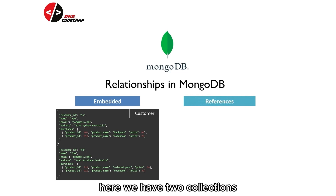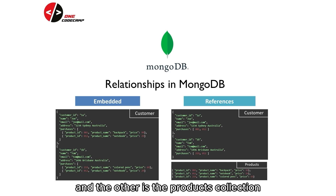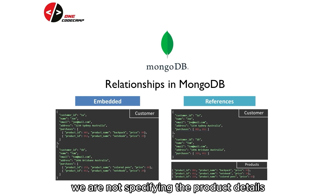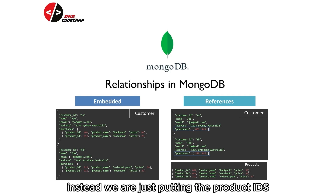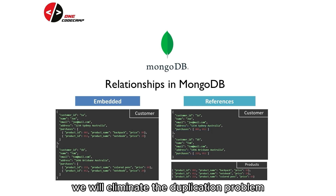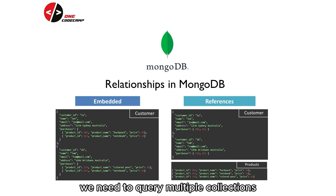With References, we have two collections: the Customer's Collection with two documents, and the Products Collection with three documents. In the Customer's Collection, in the Purchases field, we are not specifying the product details. Instead, we are just putting the product IDs. So the Customer's Collection is referencing the Products Collection using the ID of the product documents. By using this, we eliminate the duplication problem. However, in order to get the desired result from both collections, we need to query multiple collections.